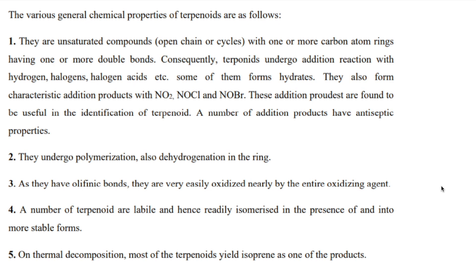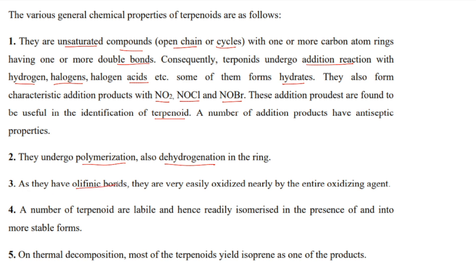Let's talk about some chemical properties of terpenoids. They are basically unsaturated compounds, generally open chain or cyclic with one or more carbon atom rings and having one or more double bonds. Consequently, terpenoids undergo addition reactions — with hydrogen, with halogens, with halogen acids, etc. Some of them also form hydrates, and they form characteristic addition products with NO₂, NOCl, NOBr, etc. These addition products are useful in the identification of terpenoids and are also antiseptic in nature.